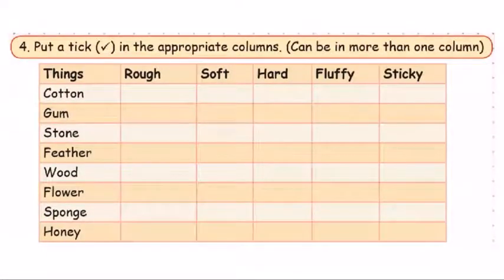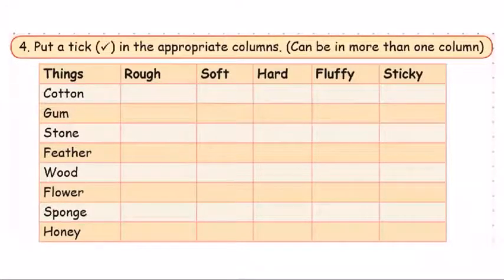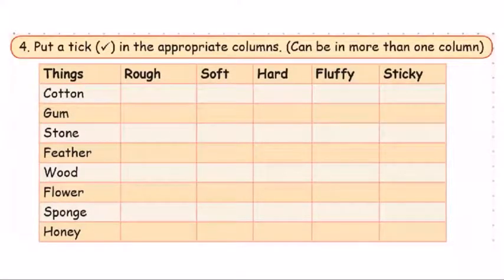The fourth exercise: put a tick in the appropriate columns. The columns are rough, soft, hard, fluffy, and sticky. We will tick the properties that apply to each object.